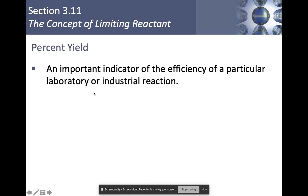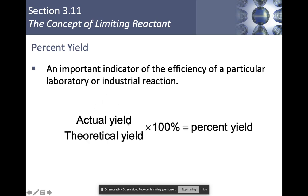Our last part is percent yield. Percent yield is an important indicator of the efficiency of a reaction, calculated as actual yield divided by theoretical yield, times 100. The closer you are to 100%, the more efficient the reaction. If you get over 100% yield, you made some mistake — perhaps miscalculating, or not drying your product so water adds extra weight. If your yield is very low, like 20–30%, you probably made a large mistake in the lab.